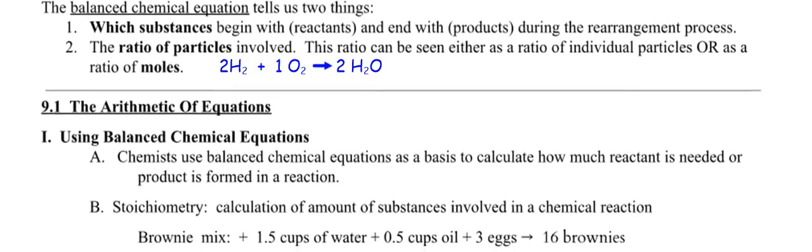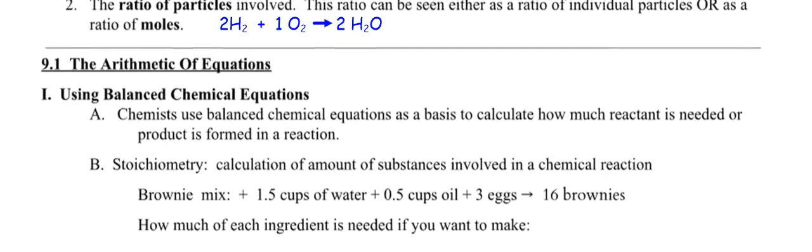So let's see what section 9.1 is all about. It says using balanced chemical equations. Chemists use balanced equations as a basis to calculate how much reactant is needed or product is formed in a reaction. So stoichiometry is the calculation of amount of substances involved in chemical reaction. So this is the brownie mix. This is actually from my brownie mix here in my cabinet.